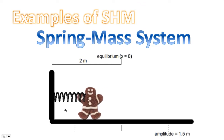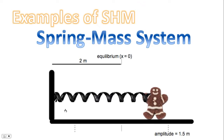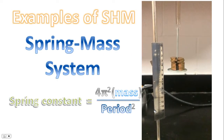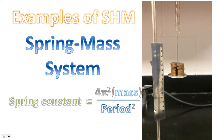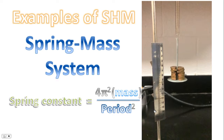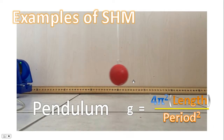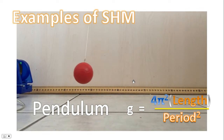Examples of simple harmonic motion include the spring-mass system we see here moving back and forth, the spring-mass system here seen oscillating up and down — and notice there is a formula that can be used to predict the spring constant based on the mass and the period. Another example of simple harmonic motion is the pendulum seen swinging here, and that formula can be used to predict the acceleration due to gravity.